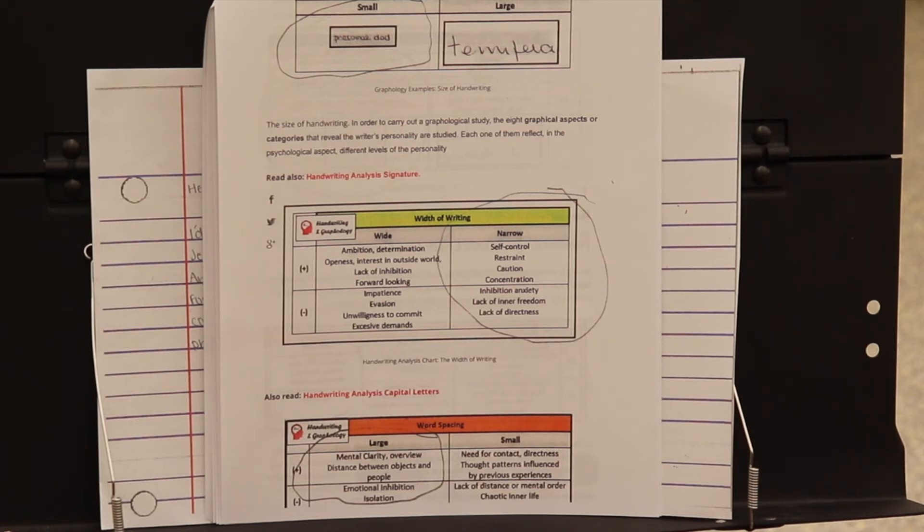Now let's go down to word spacing. Large writing again. Positive: mental clarity. Negative could be emotional inhibition.